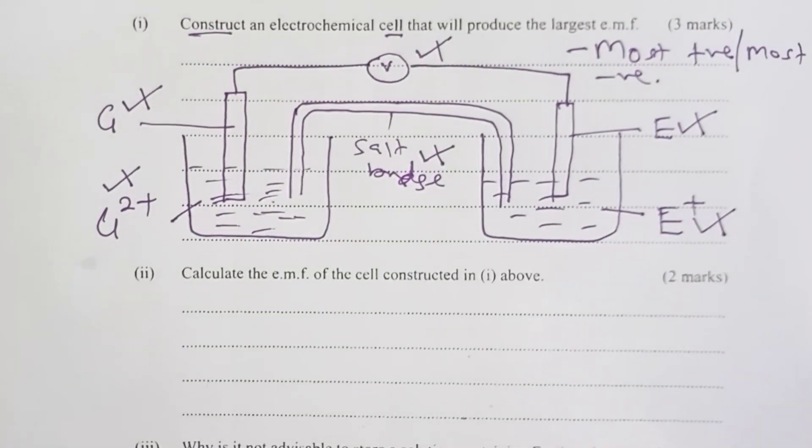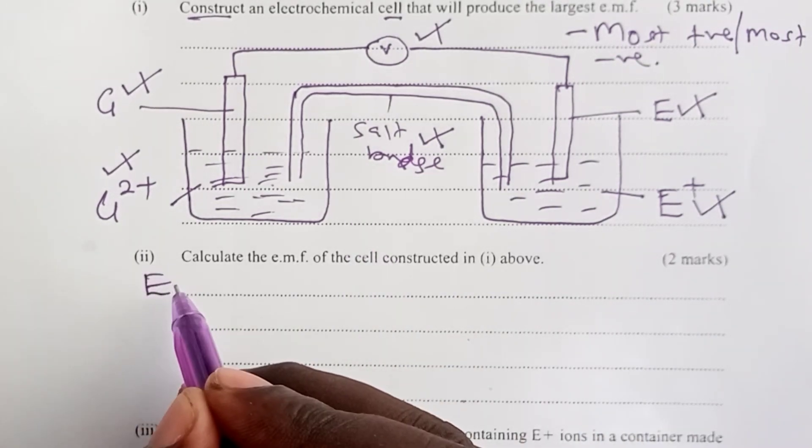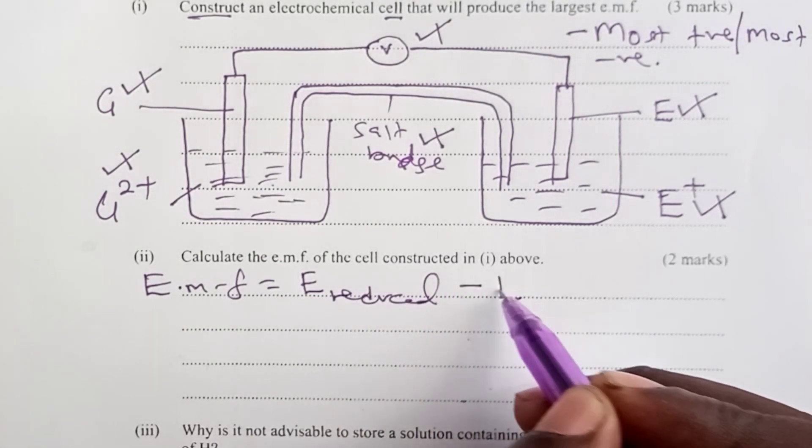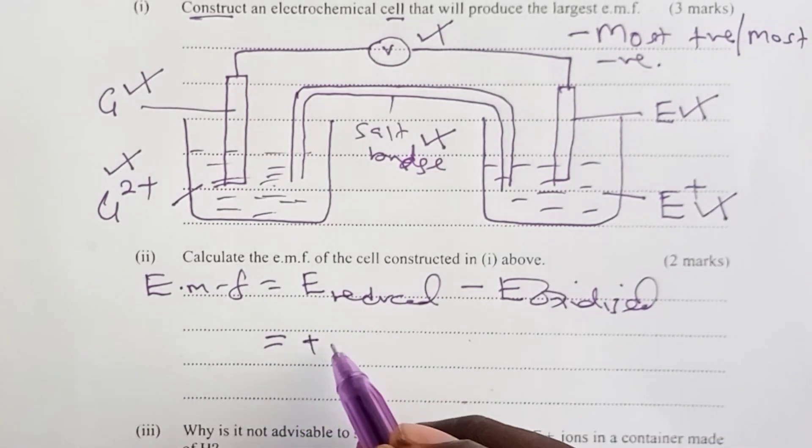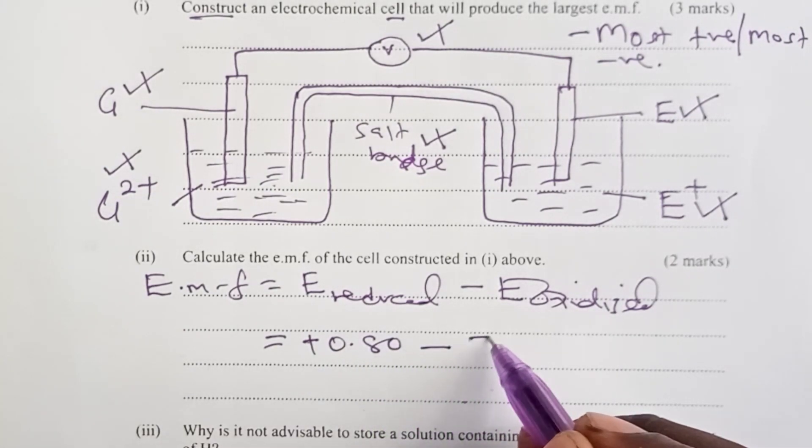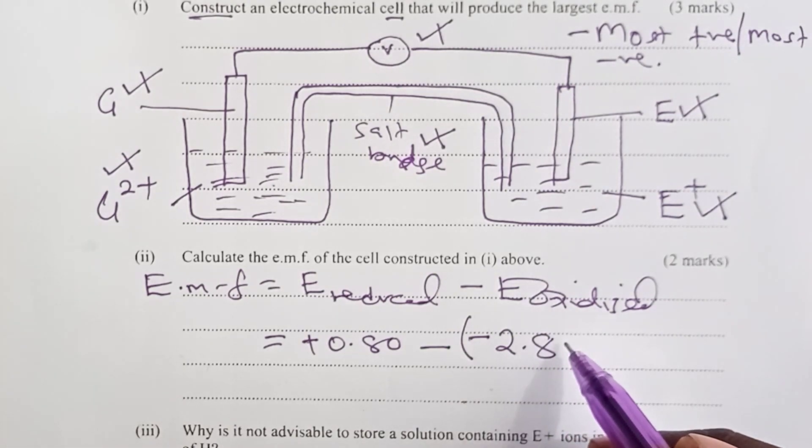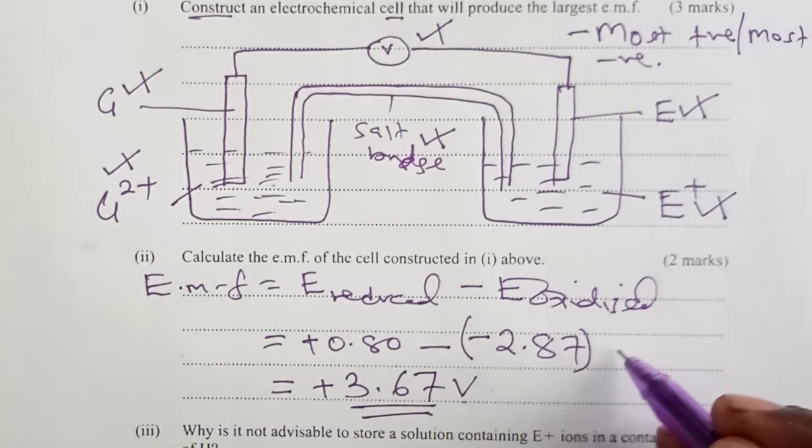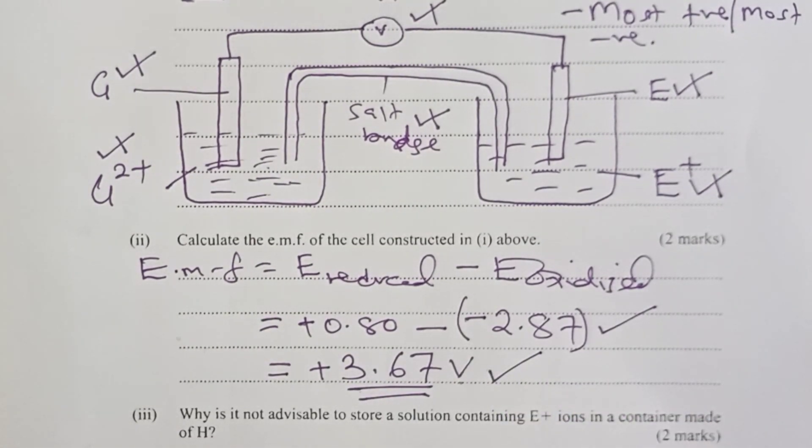Roman 2 of part B is asking us to now go ahead and calculate the EMF of the cell that we have just constructed. So, EMF is given by the formula E reduced minus E oxidized. And we've agreed E, the half cell E with positive 0.80 volts would be reduced. So, we shall subtract from it G, which will be oxidized, and G has E naught value of negative 2.87. So, if you do that quick arithmetic, we are able to get EMF of positive 3.67 volts. It is two marks, so one mark for that relation, and then another mark for the answer, together with the units.